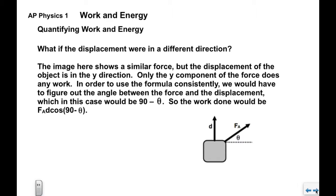What if the displacement were in a different direction? We have a similar force here to the right and up, but the displacement of this object is in the y direction. Only the y component of the force does any work here, because it's got to be in the direction of the displacement. In order to use the formula consistently, we would have to figure out the angle between the force and the displacement, which in this case would be 90 minus theta. So the work done by this applied force would be F A d times the cosine of 90 minus theta.